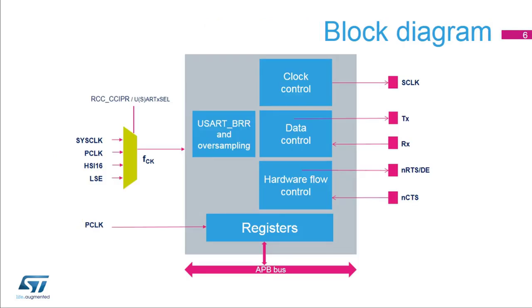This is the USART block diagram. The USART clock FCK can be selected from several sources: system clock, peripheral clock or APB clock, the high-speed internal 16 MHz RC oscillator, or the low-speed external 32.768 kHz crystal oscillator.